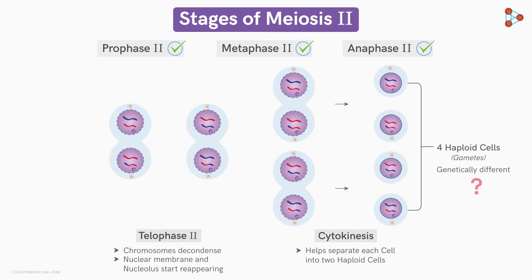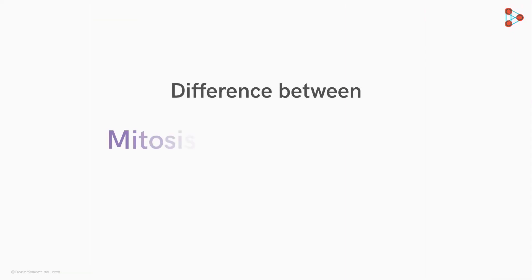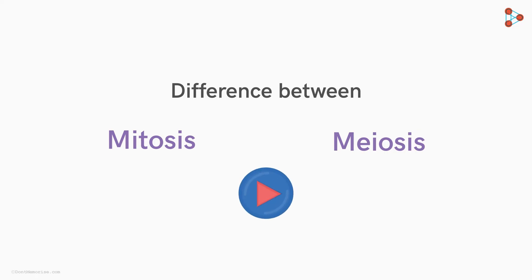Genetic differences mainly occur due to recombination between chromosomes, which takes place during meiosis I. And with this, we come to an end with the concept of meiosis. In the next video, we'll look at the major differences between mitosis and meiosis.